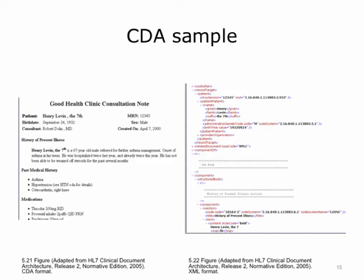Here is a sample of a CDA. On the left is the CDA for a consultation note as it is rendered on the screen for human readability. Notice the sections called History of Present Illness, Past Medical History, and Medications. When you look at the XML on the right, you will see a lot of tags and the header information encoded. The patient's name is divided into the given name, the family name, and the suffix. There is the administrative gender code and the birth date and time. The body of the document is an XML body containing a series of sections. The first section is for the history of present illness. The section is a narrative block of text which is human readable. It contains rendering instructions to bold the text. If we scrolled further down in the document, we would find more sections with narrative blocks and also perhaps some entries which are machine-processable representations of the content.